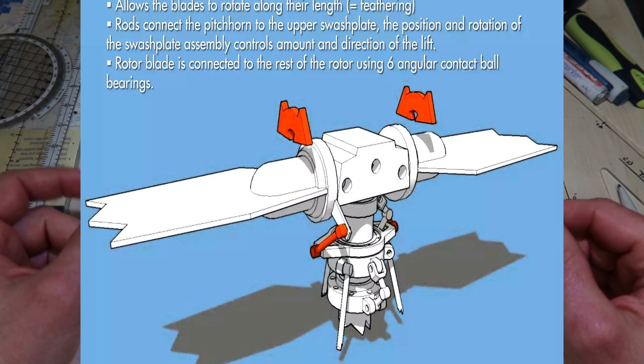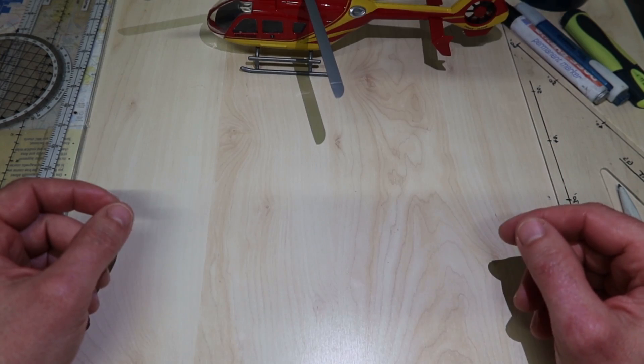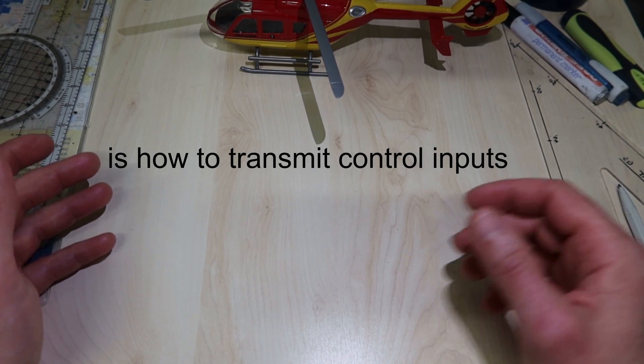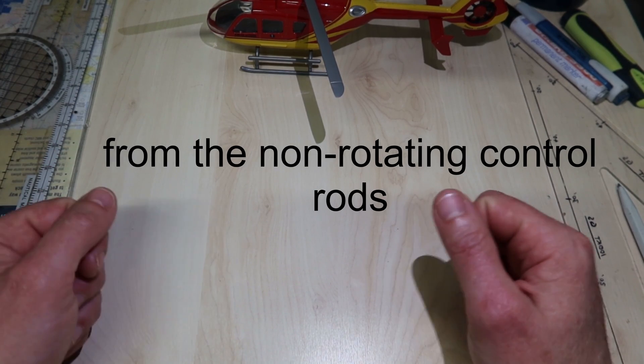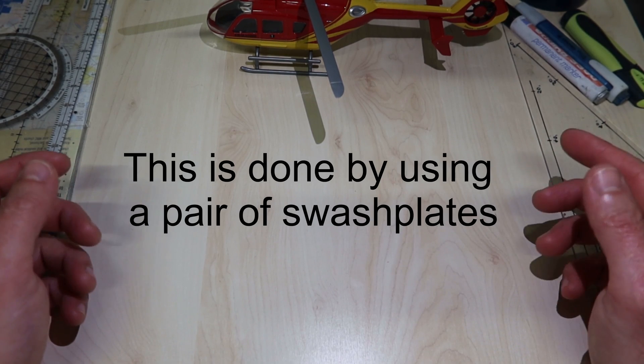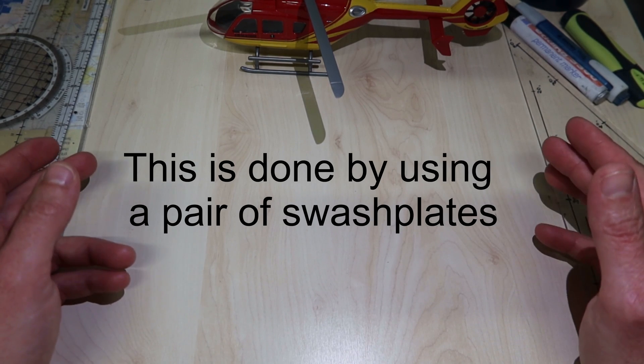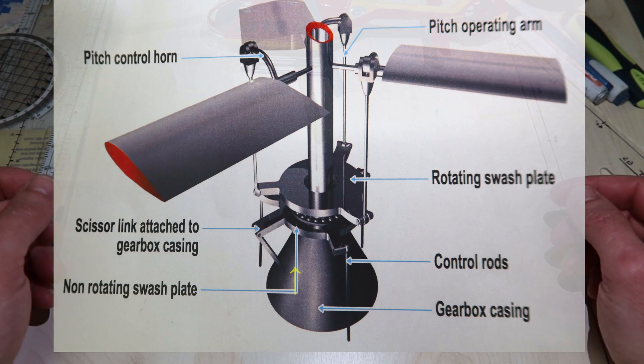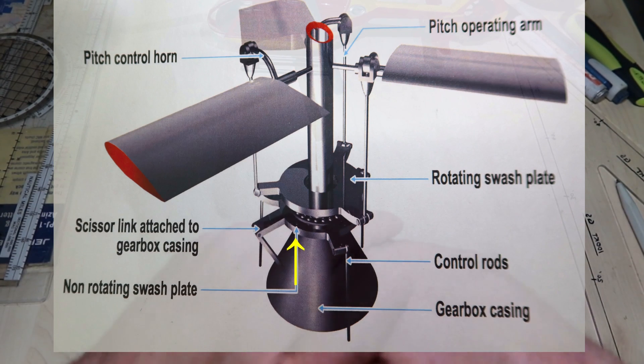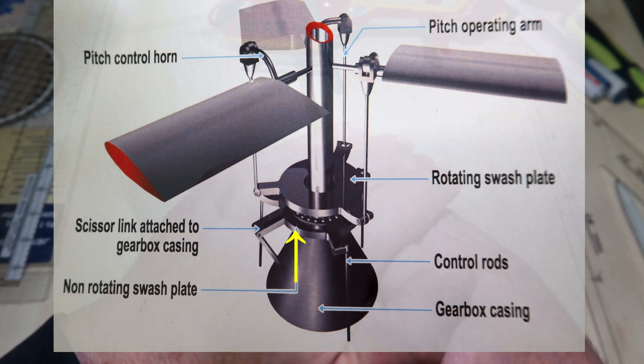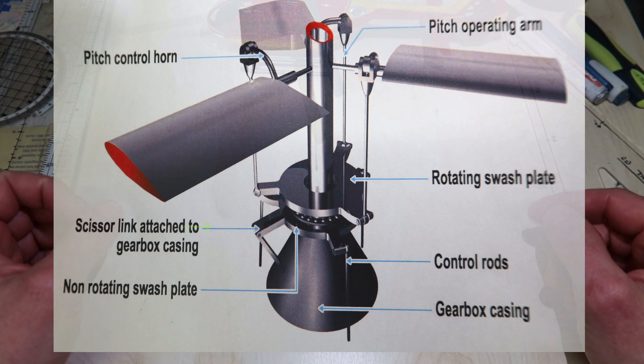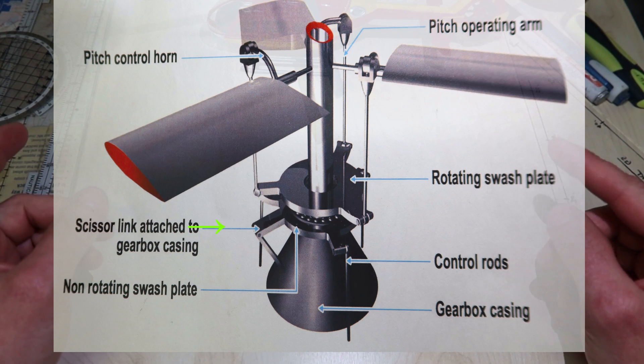The main problem is how to transmit control inputs from the non-rotating control rods to the rotating head. This is done using a pair of swash plates. A non-rotating swash plate, sometimes called a fixed star, is attached to the gearbox housing using a scissor link. The control rods leading from the cyclic and collective controls are attached to the plate.